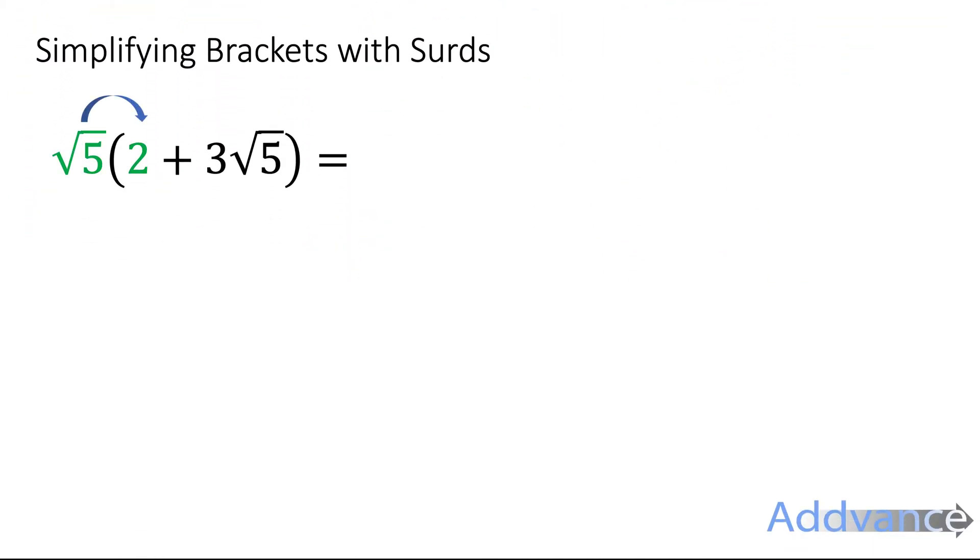We can expand some brackets with surds. So this one, root 5 times 2 plus 3 root 5. You multiply out the bracket. Root 5 times 3 root 5 would be 3 root 5 times root 5. But root 5 times root 5 would be 5. So it's 3 times 5, which is 15. I get 2 root 5 plus 15.